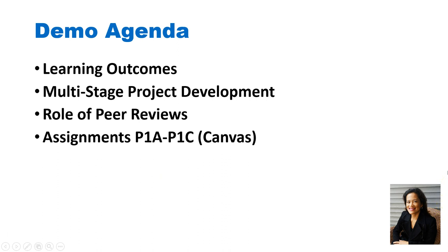To wrap up: we went over the learning outcomes, the graphical multi-stage project development overview, briefly covered the role of peer reviews, and walked through Projects 1a through 1c in Canvas. I expect you will revisit this video when you feel a little lost — it will trigger your attention to things discussed here. If you're still confused about what's expected, email me. I don't want you lost and wondering what to do next. Thank you very much for watching.